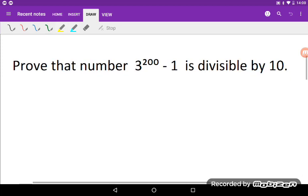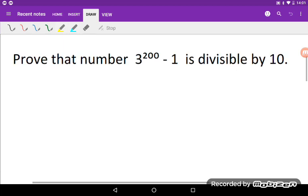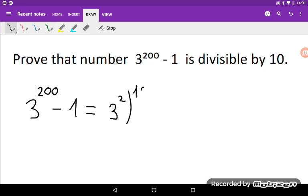And I will present you two solutions to this problem. So the first solution is that I can write 3 to the power of 200 minus 1 is equal to number 3 squared to the power of 100 minus 1.